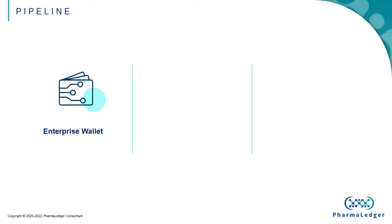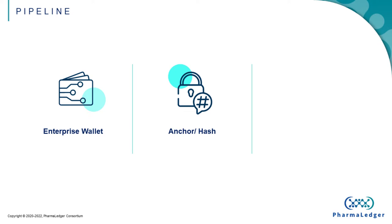It is also worth mentioning that the EPI or the serial numbers are not actually loaded on the blockchain. What is loaded on the blockchain is a pointer to the location within the controlled and trusted environment where the data is stored. This is what Sonia was referring to when she was talking about the hash or the anchor. I hope this rather high-level clarification helped, and I apologize to the technical experts out there for my rather un-technical clarification.